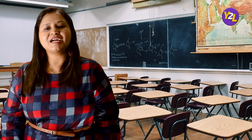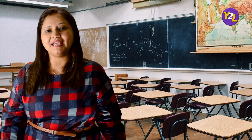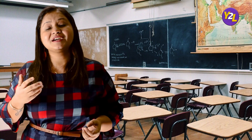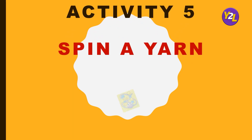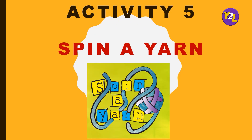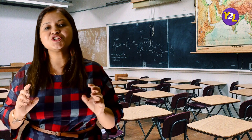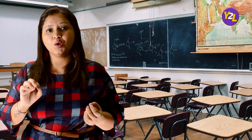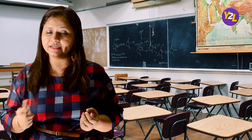The fifth game, which also enhances English speaking skills and creative thinking, is called Spin a Yarn. Students are going to weave a story that they do not know in advance. The teacher gives a starting line, and then each student must begin their sentence alternately with 'fortunately' and 'unfortunately'.